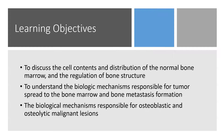To understand this we need to discuss the cellular content and the distribution of the normal marrow and how that regulates the bone structure. We also need to understand the biological mechanisms responsible for the spread of tumors to the bone marrow and how bone metastases are formed. Finally we need to understand the biological mechanisms responsible for osteoblastic and osteolytic malignant bone lesions.